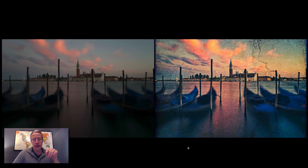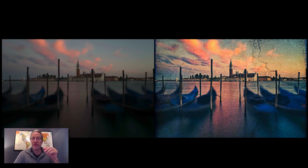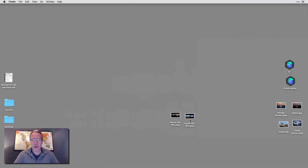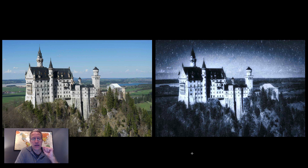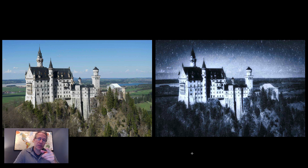Here's the first photo I'm going to work on — a before and after. It's a Venice photo, a long exposure taken at sunset. The final has a vintage look. The second photo I'm going to work on is Neuschwanstein Castle in Bavaria, southern Germany — a daytime shot that I turned into a wintry scene with snowflakes falling everywhere. Let's go ahead and get started.